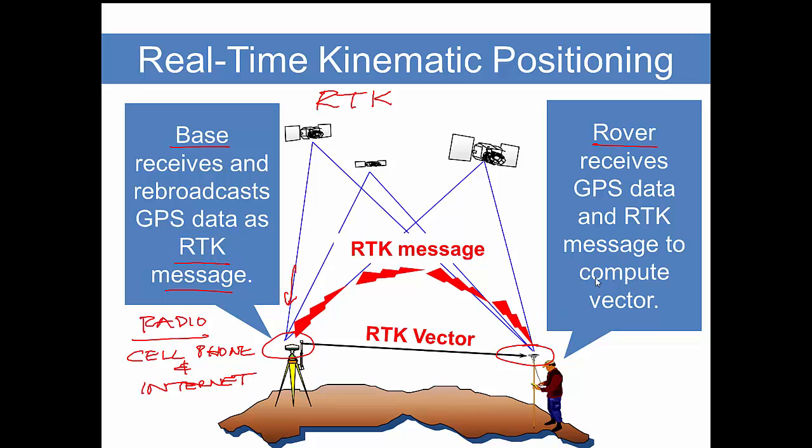We send this data in all directions as the RTK message, and the rover then is also receiving data from the very same satellites because it's simultaneous observation. So it combines the GPS data and the RTK message, and the software in your rover computes the precise vector from the base to the rover. Once again, this is a differential position. We get a difference in position that can be expressed as a direction and distance.